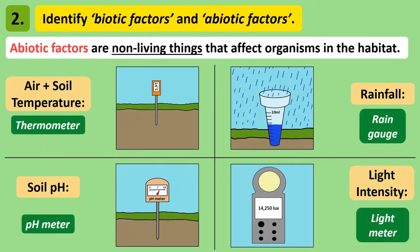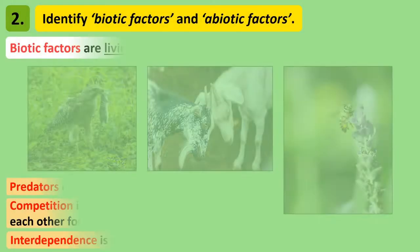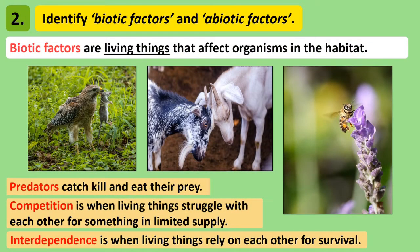During our investigation we use a thermometer to measure temperature, a pH meter to measure pH, a rain gauge to measure rainfall, and a light meter to measure light. Biotic factors are how living things can affect other living things by their presence in the area. Predator-prey interactions, competition and interdependence are biotic factors we looked at in more depth in our part one video.